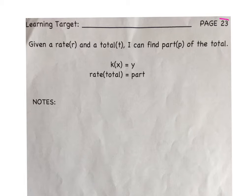Welcome to page 23 of Excel packet number 4. On this page, our I can statement is: given a rate and a total, I can find part of the total.